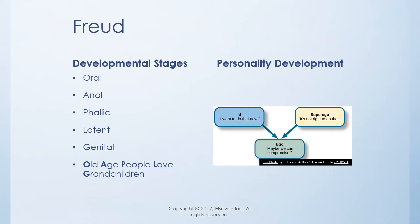You can use the mnemonic at the bottom of the screen: 'Old Age People Love Grandchildren' — O for Oral, A for Anal, P for Phallic, L for Latent, and G for Genital. That helps you remember Freud's five psychosexual stages.